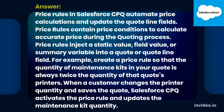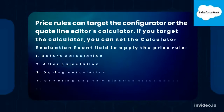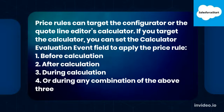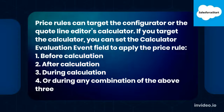When a customer changes the printer quantity and saves the quote, Salesforce CPQ activates the price rule and updates the maintenance kit quantity. Price Rules can target the configurator or the quote line editor's calculator. If you target the calculator, you can set the calculator evaluation event field to apply the price rule: before calculation, after calculation, during calculation, or during any combination of the above three.